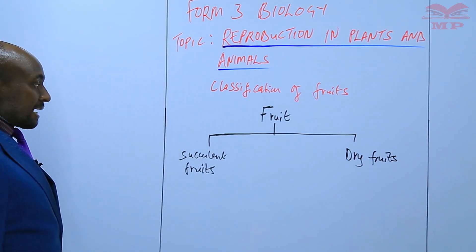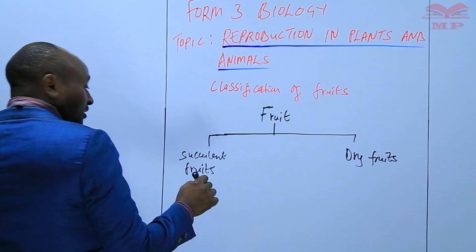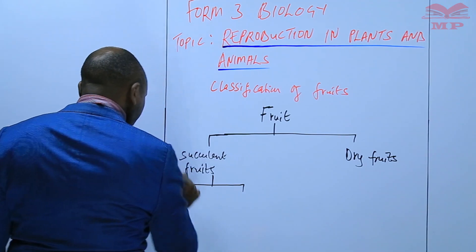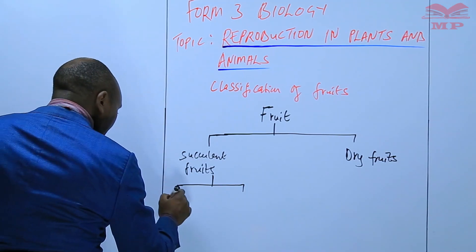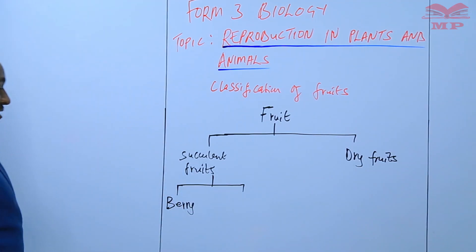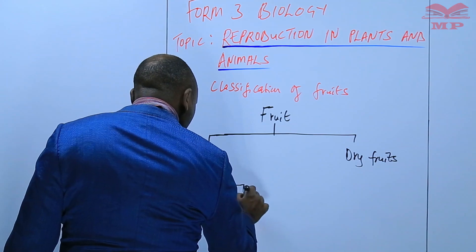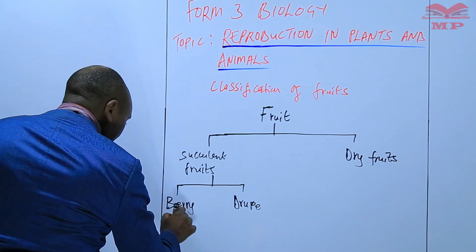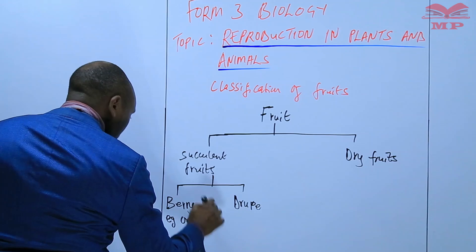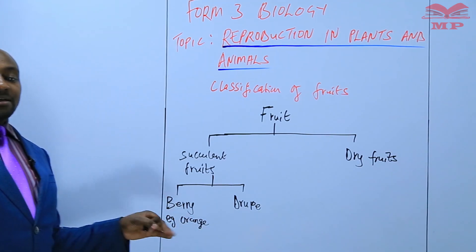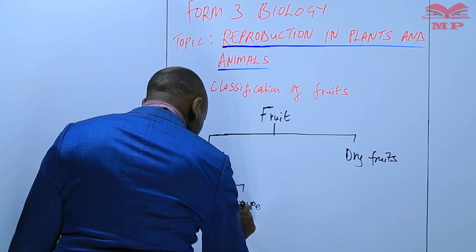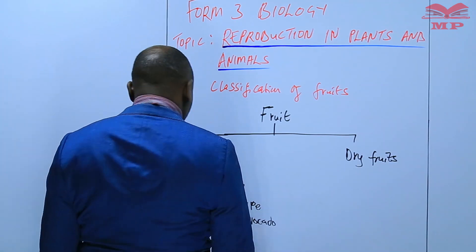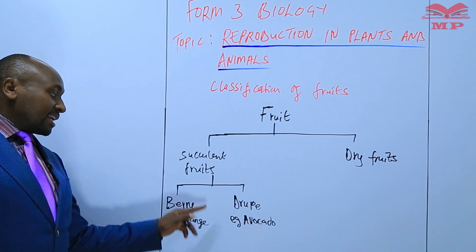Those are the two broad categories. In the succulent fruits, we subdivide them further into two: we have what we call berries and we have a drupe on the other side. A berry is something like an orange or a tomato, and a drupe — we have an example of an avocado. So both are succulent fruits, but one is a berry, the other one is a drupe.